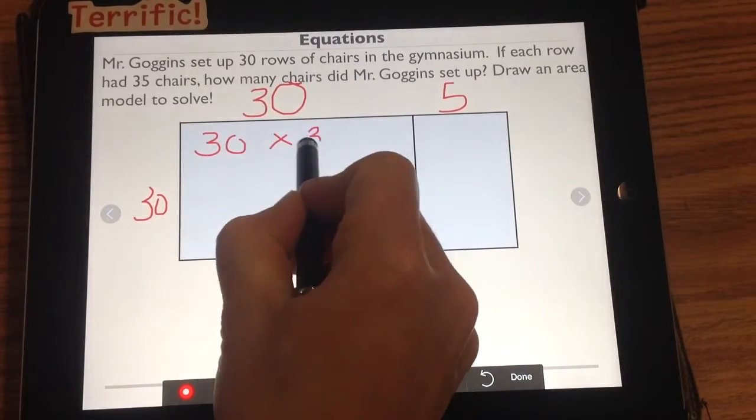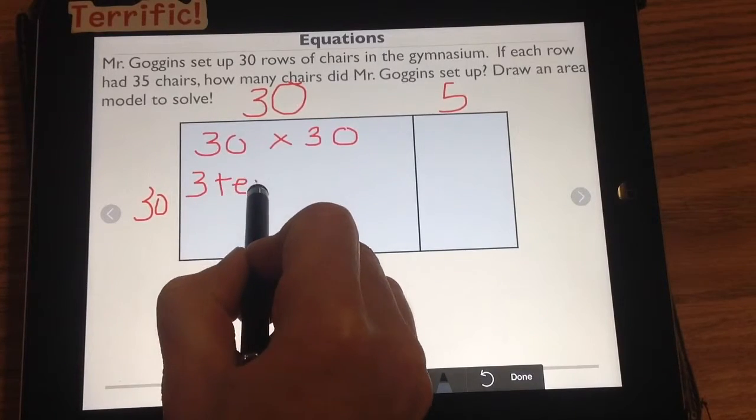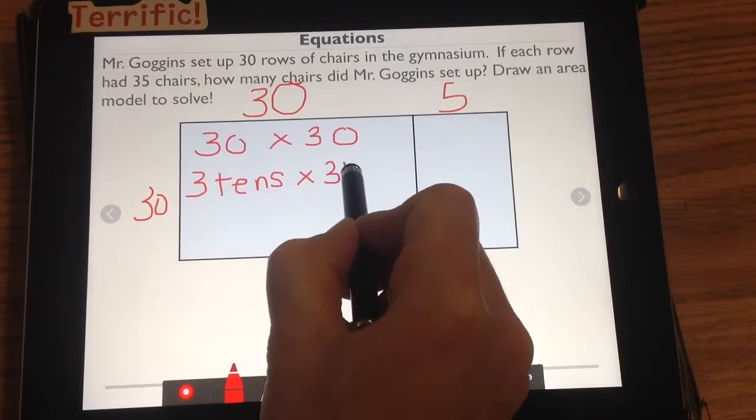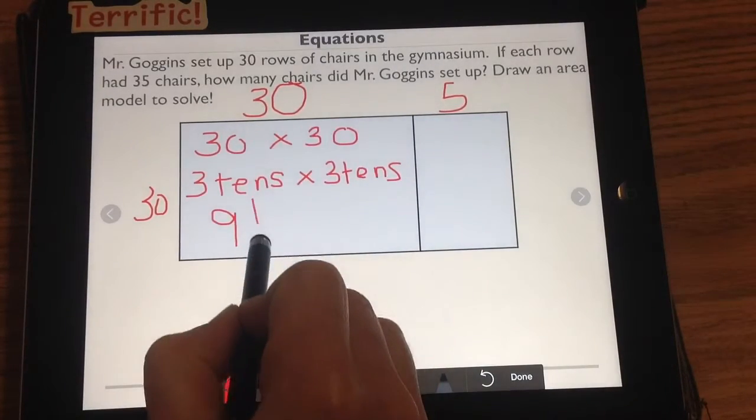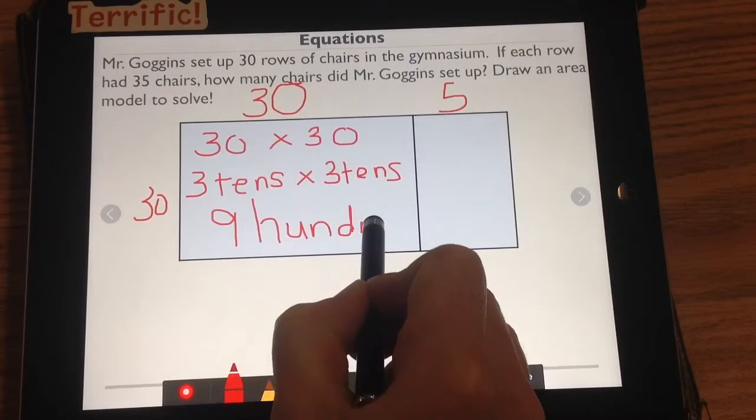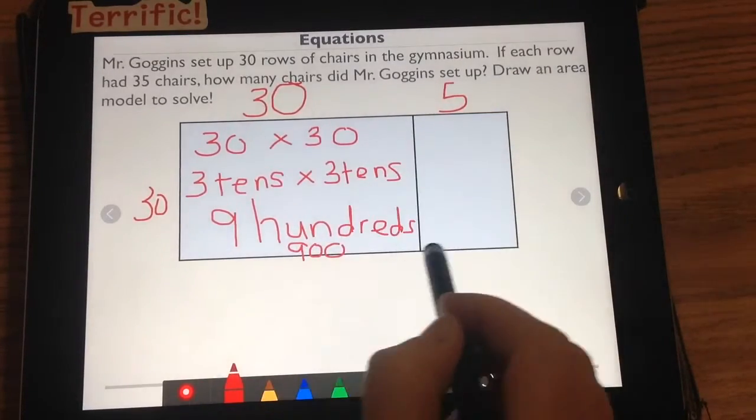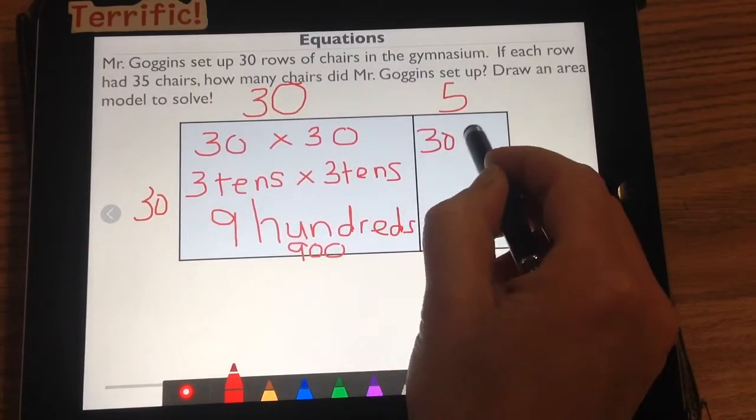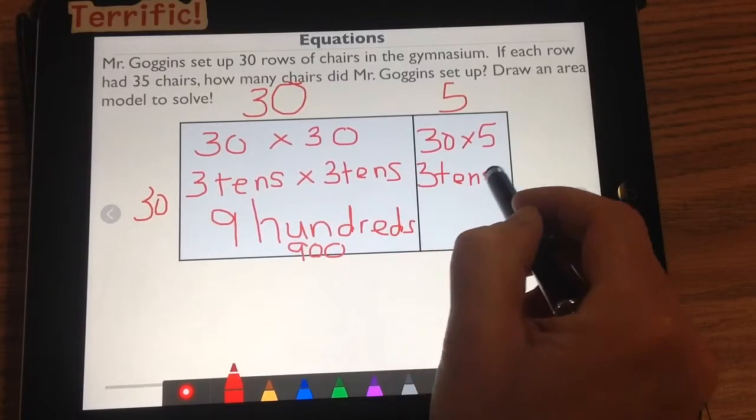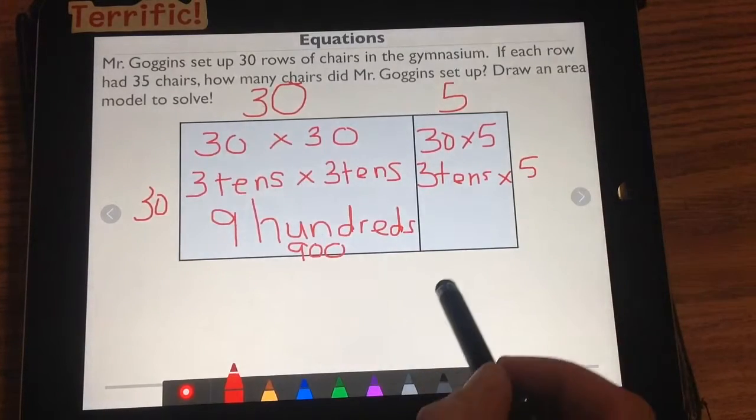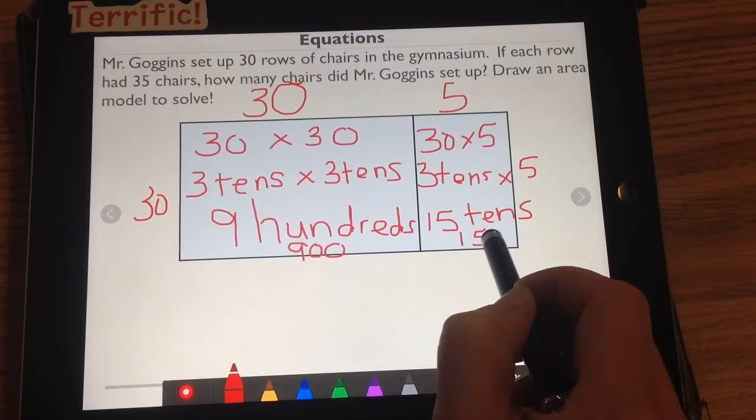30 times 30, because that's area. Unit form is 3 tens times 3 tens, which gives me 9 hundreds, or 900. If we do the area of this rectangle, we have 30 times 5, which is the same as saying 3 tens times 5, which is the same as saying 15 tens, which of course is the same as saying 150.